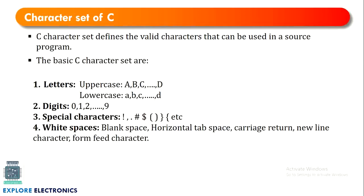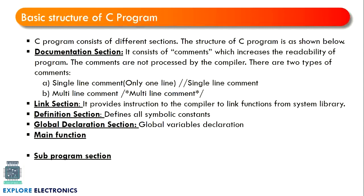What are the character sets used in C? The character set is the valid characters that can be used in the program. We can use uppercase and lowercase letters, digits from 0 to 9, special characters, white space, and horizontal tab space. These are the characters we can use in a C program, and when we start writing programs we'll understand which characters are allowed and which are not.